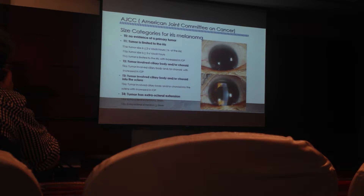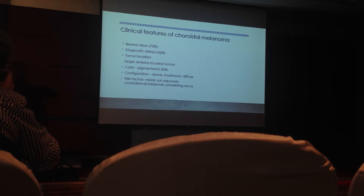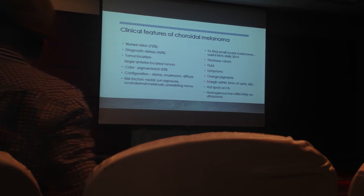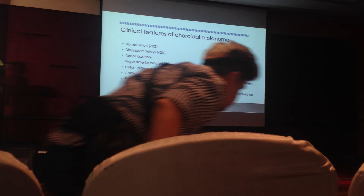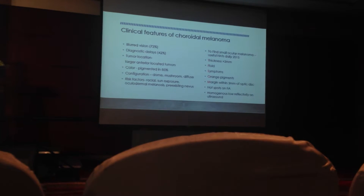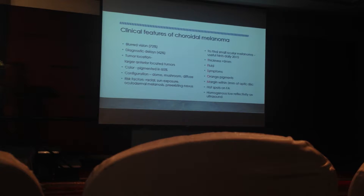We do not have to memorize it, but just keep in mind that when you see patients you can make a better classification. For the posterior uvea we have choroidal and ciliary body melanoma. Most patients present with decreased vision, and as mentioned, diagnostic delays occur in about half of patients — one reason being anteriorly located tumors or the diffuse type of choroidal melanoma.